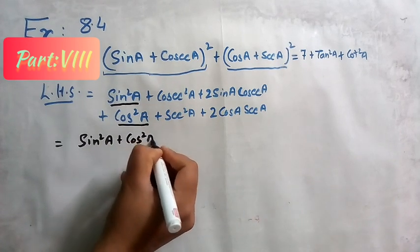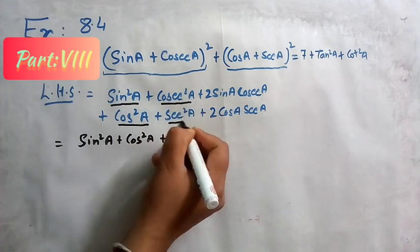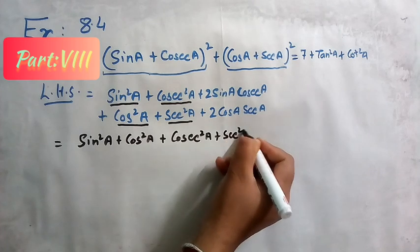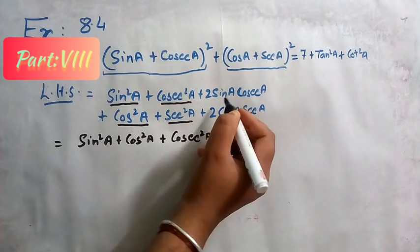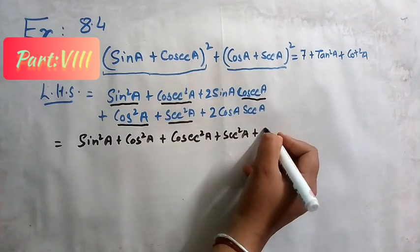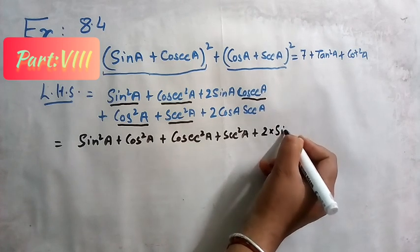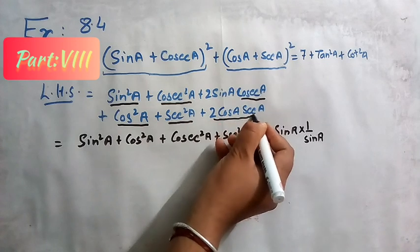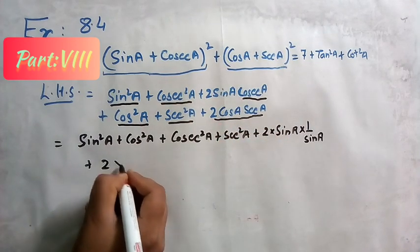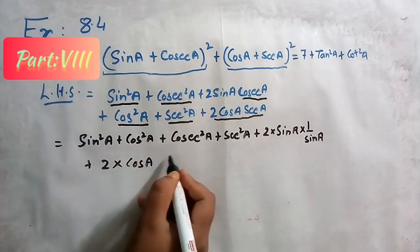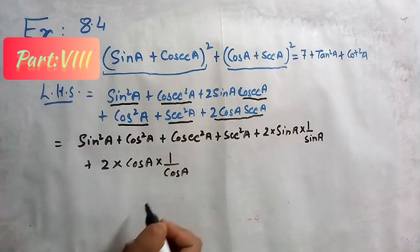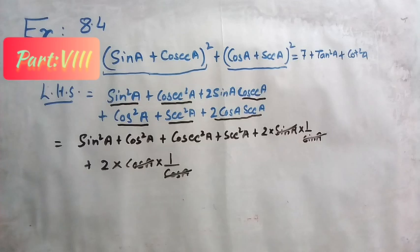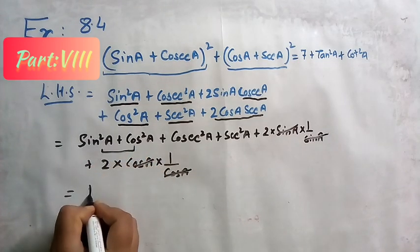Rearranging: sin²A + cos²A together gives 1. Then cosec²A and sec²A remain. For the cross terms: cosecA = 1/sinA, so 2·sinA·(1/sinA) = 2, and secA = 1/cosA, so 2·cosA·(1/cosA) = 2. So sinA and cosA cancel in their respective terms, giving 2 + 2 = 4. Now sin²A + cos²A = 1.